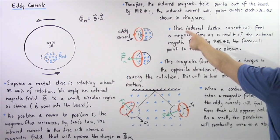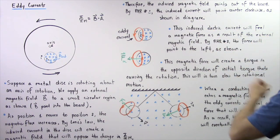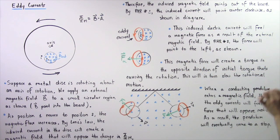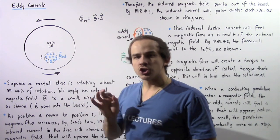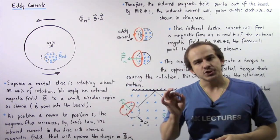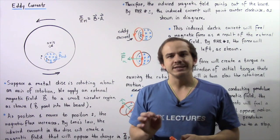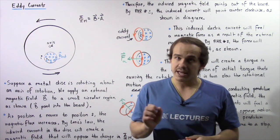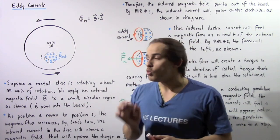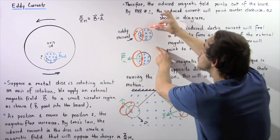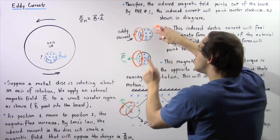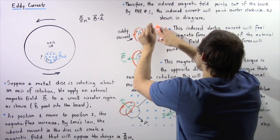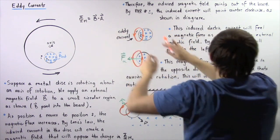This induced electric current — the eddy current — will feel a magnetic force as a result of the external magnetic field. Whenever we have an electric current moving within an external magnetic field, that external magnetic field will create a magnetic force on that moving current. So the external magnetic field will create a magnetic force on our eddy current.